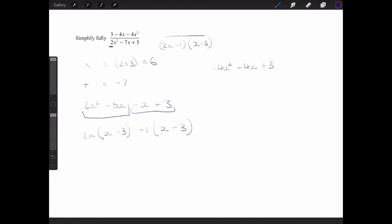And I'm now going to do exactly the same thing. So I'm looking for two numbers and when I multiply them they're going to equal negative 4 times 3, which is negative 12, and when I add them together they're going to equal negative 4.